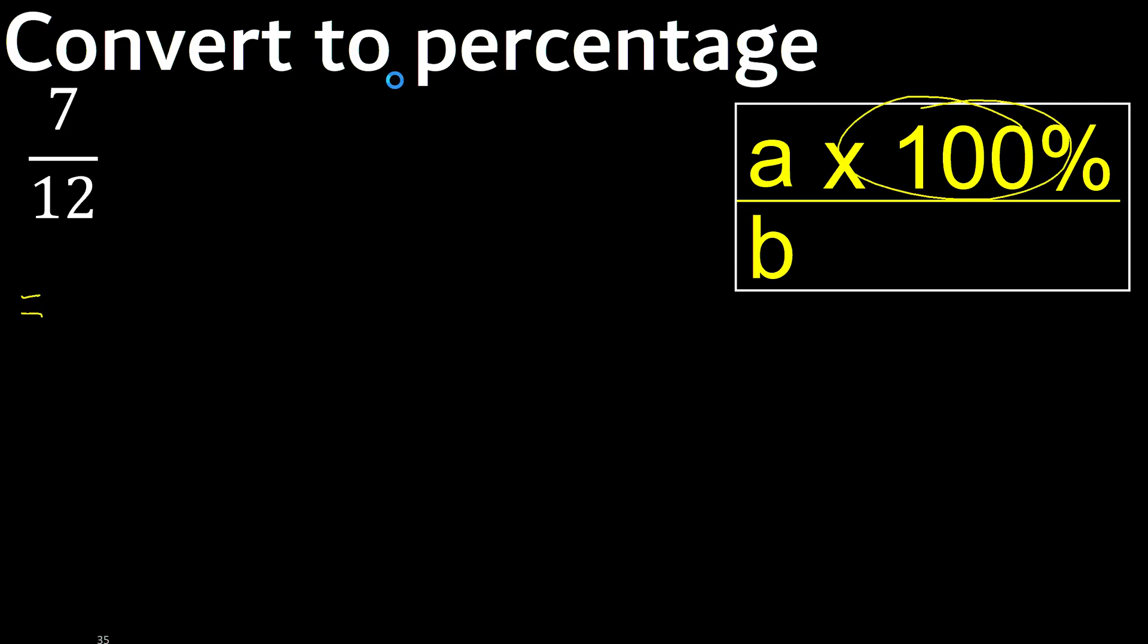Multiply by 100. 7 multiplied by 100 is 700 percent divided by 12.